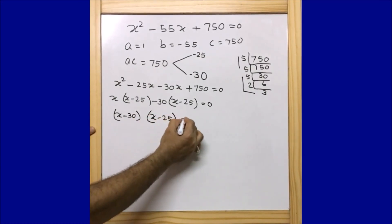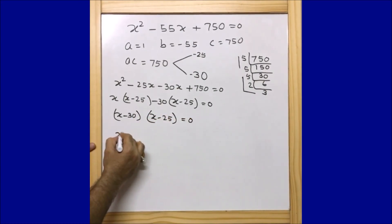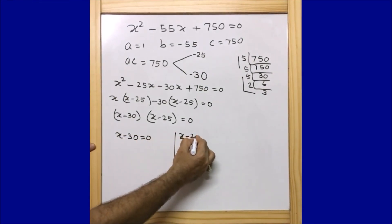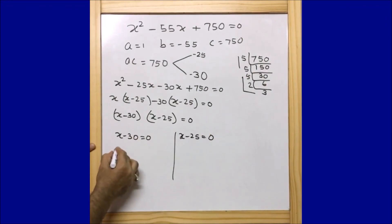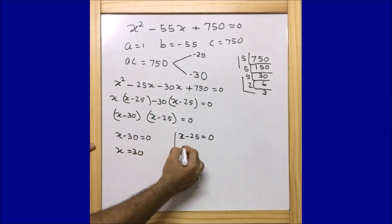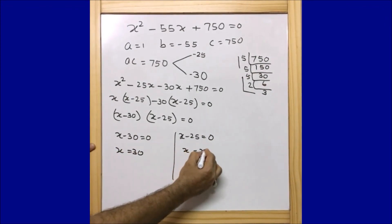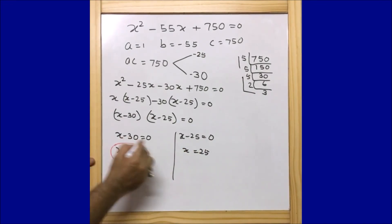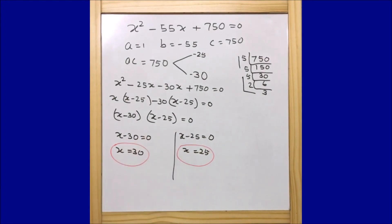The two equations are: x minus 30 equals 0 and x minus 25 equals 0, giving x equals 30 or x equals 25. These calculations are very simple and straightforward. If you have any questions or doubts, please reach out to me in the comment section and I will get back to you.